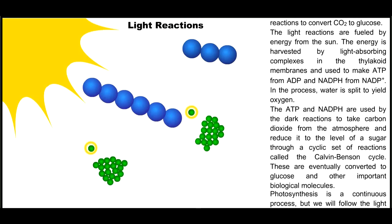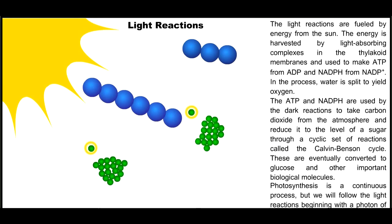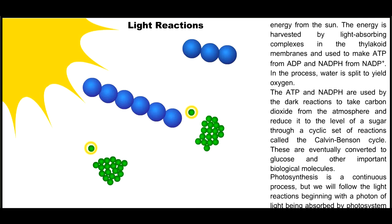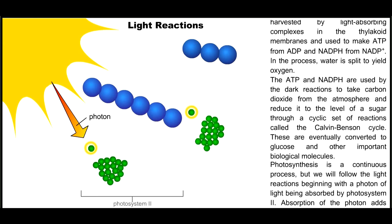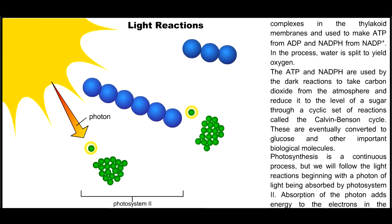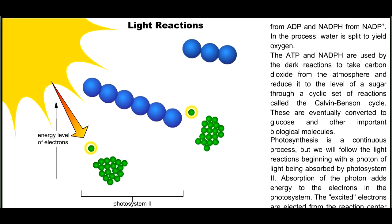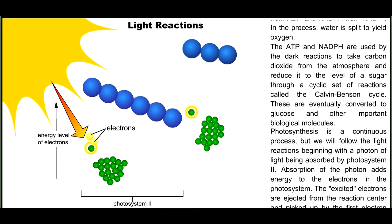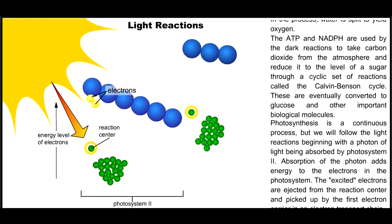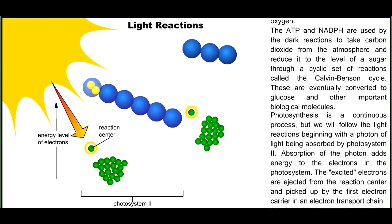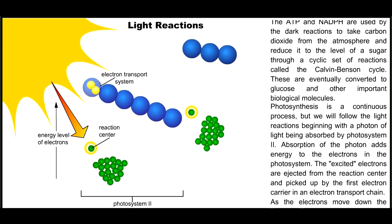Photosynthesis is a continuous process, but we will follow the light reactions beginning with a photon of light being absorbed by photosystem II. Absorption of the photon adds energy to the electrons in the photosystem. The excited electrons are ejected from the reaction center and picked up by the first electron carrier in an electron transport chain.